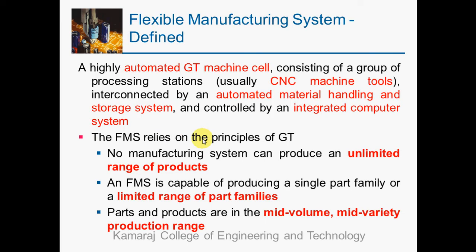We can now define what is a flexible manufacturing system. FMS is a group of CNC machines interconnected by an automated material handling system and controlled by a computer control system. The material handling system is fully automated, and the total control of the entire system is managed by an integrated computer control system. This FMS technology relies on the principles of group technology.